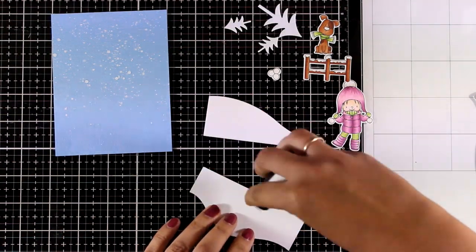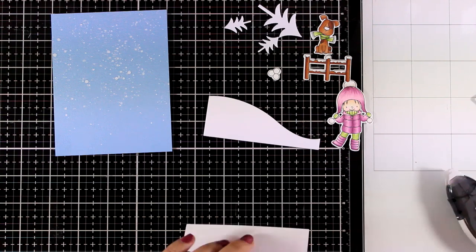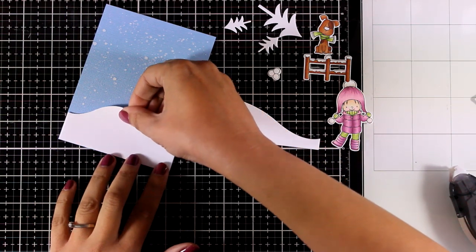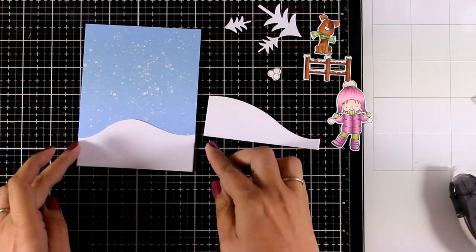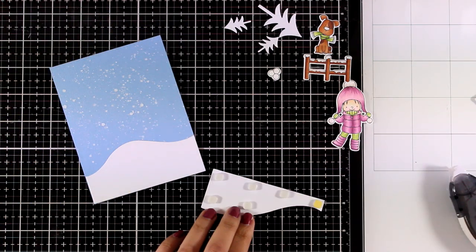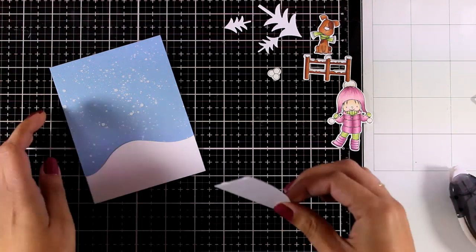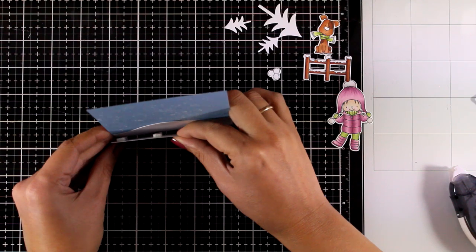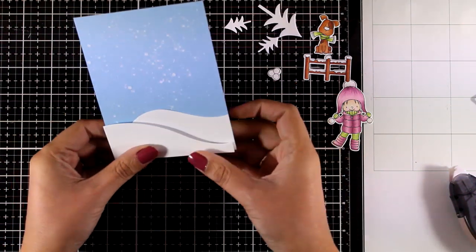I'm going to use tape runner at the back of the bigger slope and I'm going to stick it completely flat on top of my background. And of course you can use foam tape at the back of that if you want to add even more dimension. Now for the second slope I'm going to go with foam tape at the back and stick it in place as well. And you can see I end up having a lovely dimension.